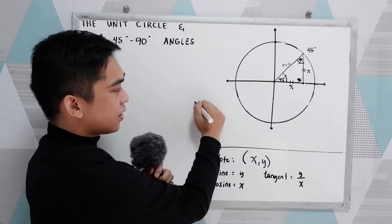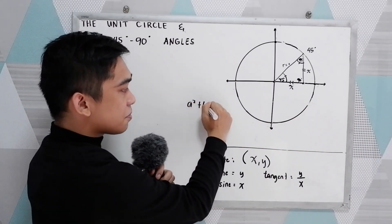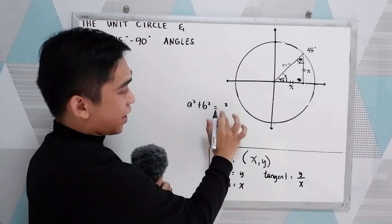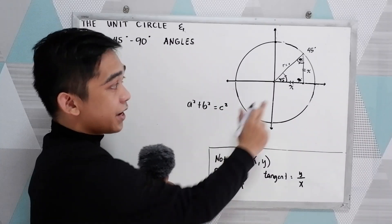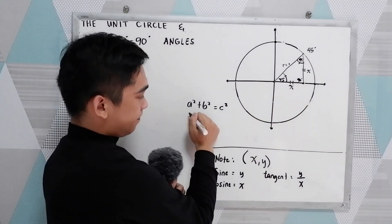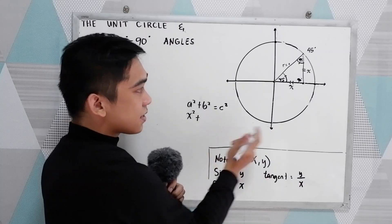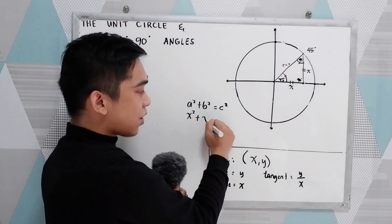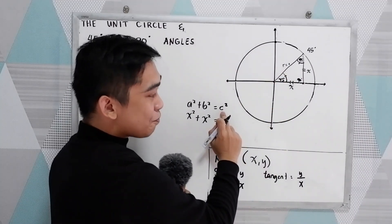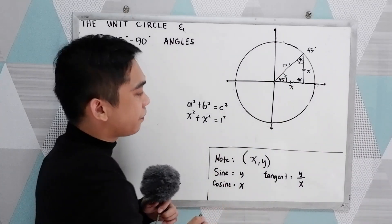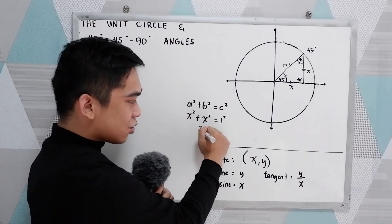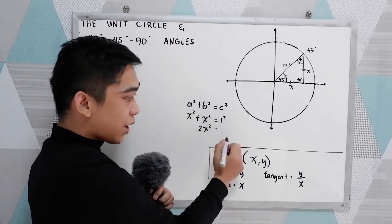So we have a squared plus b squared is equal to r squared, or c squared. In our right triangle, our a is x. So we have x squared plus x squared — the other leg, our b, is also x — equal to r, the hypotenuse, which is 1. So x squared plus x squared equals 1 squared.